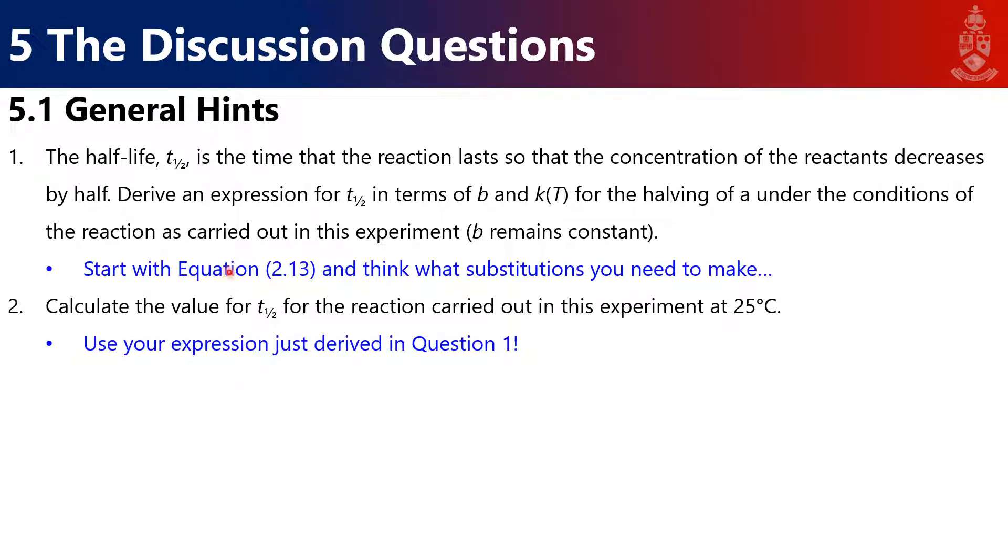Speaking of the discussion questions, some hints for them. If we look at the first one, the half-life is the time of the reaction lasts so that the concentration of the reactants decrease by half. Derive an expression for t half in terms of b and k of t. So remember, k of t is just another way of writing just k for the halving of under the conditions of the reaction as carried out in the experiment. B remains constant. So I say start with equation 2.13. So look at equation 2.13 and think what substitutions you need to make. So what is going to be halved if B remains constant? Essentially plug that into the equation and just grind through the mathematics and see what you end up with.